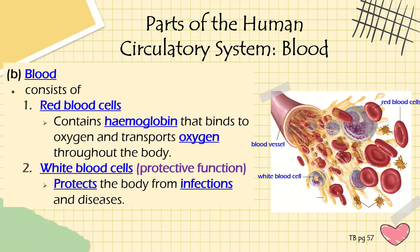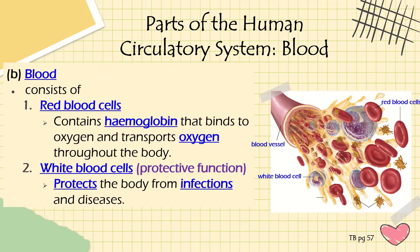Blood flows throughout your body and consists of a few things. Mainly, you have your red blood cells, which are in charge of transporting oxygen throughout the body. They contain a substance called hemoglobin - a molecule to which oxygen is able to bind and be transported throughout your body.